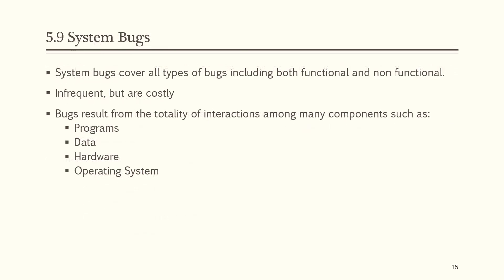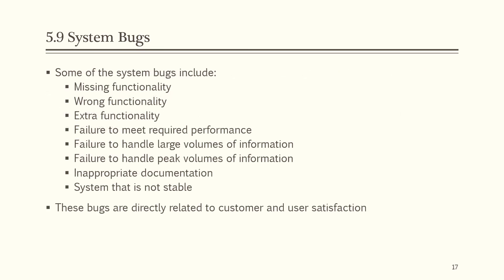System bugs cover all types of bugs including both functional and non-functional. They are infrequent but very costly, resulting from the totality of interactions among programs, data, hardware, and operating system. System bugs include missing functionality, wrong functionality, extra functionality, failure to meet required performance, failure to handle large or peak volumes of information, inappropriate documentation, and an unstable system. These bugs are directly related to customer and user satisfaction.